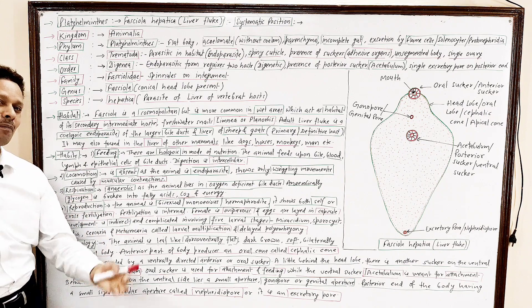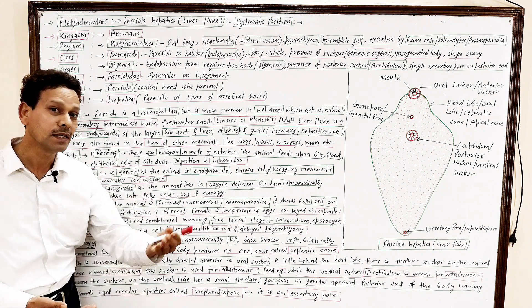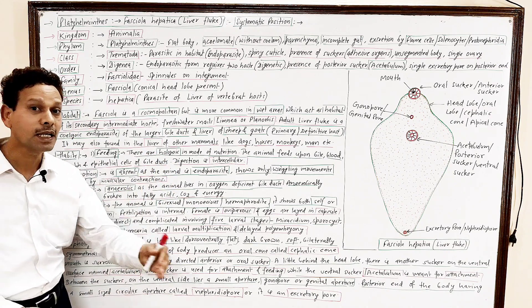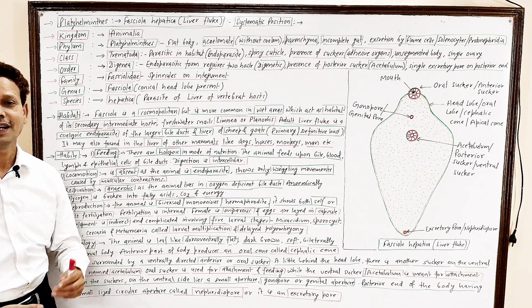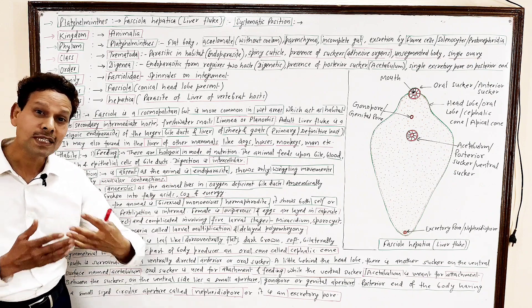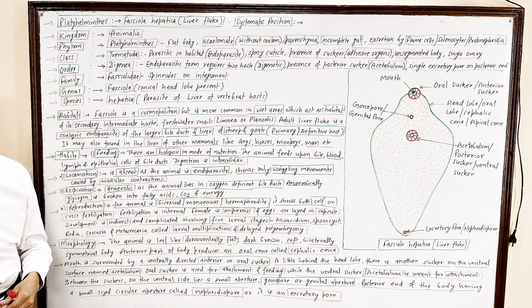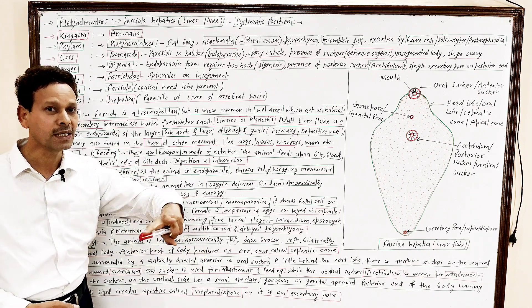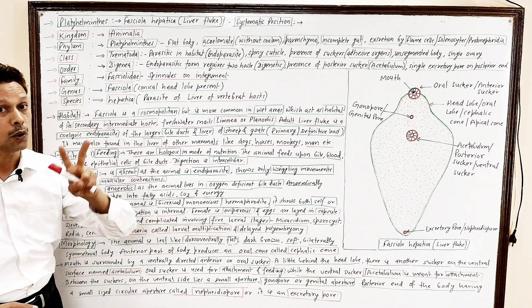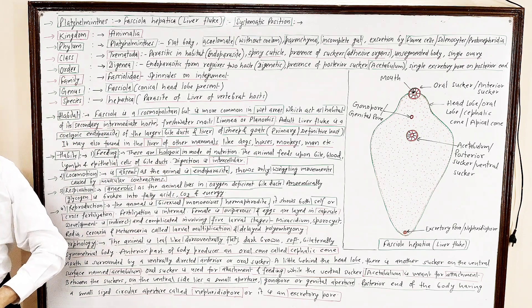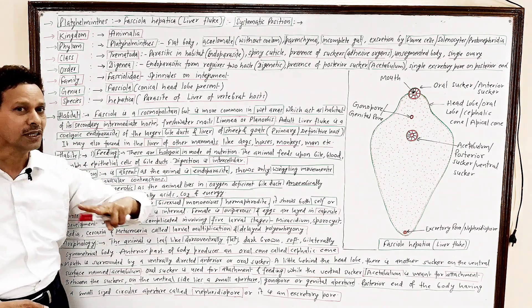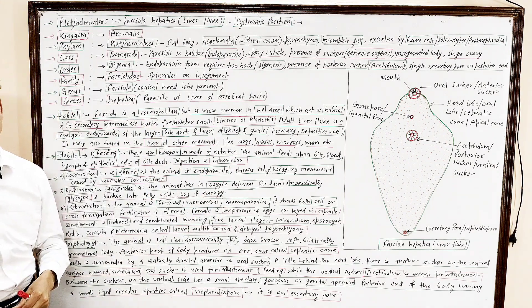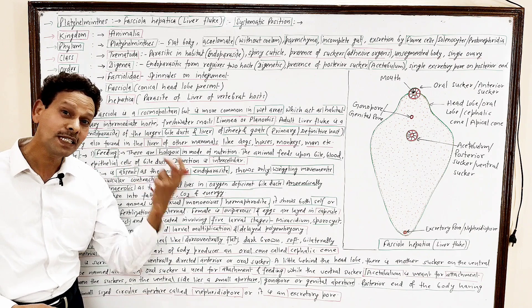Reproduction, very important. The animal is bisexual. Dear students, the animal is monoecious, it is hermaphrodite. Both sex are united. And in this animal, note down, important students, self as well as cross fertilization takes place. Fertilization, self as well as cross fertilization, and fertilization always internal.